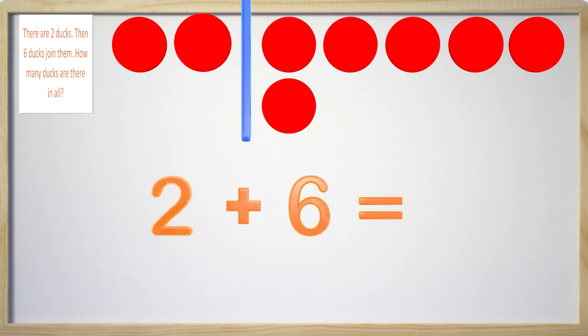We have one, two, three, four, five, six, seven, eight. So two ducks plus six more ducks equals eight ducks in all. Great job kids!